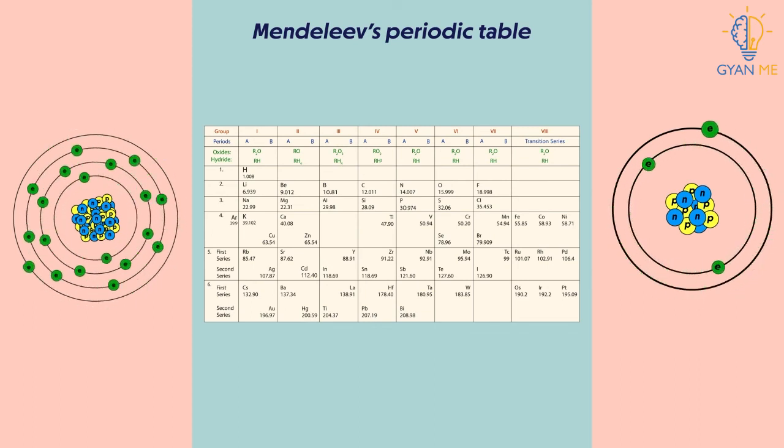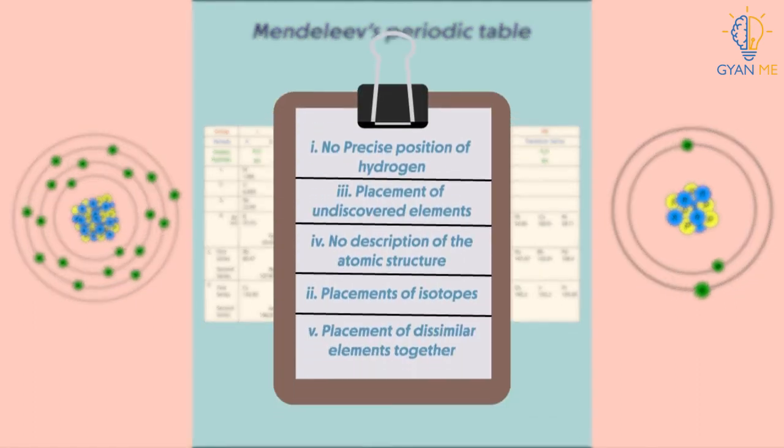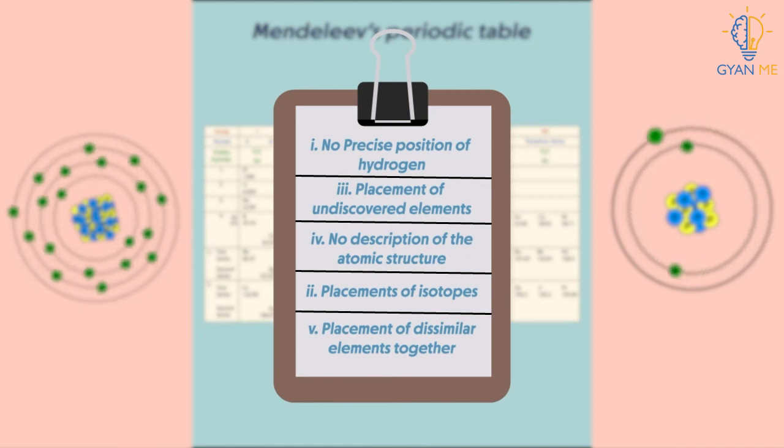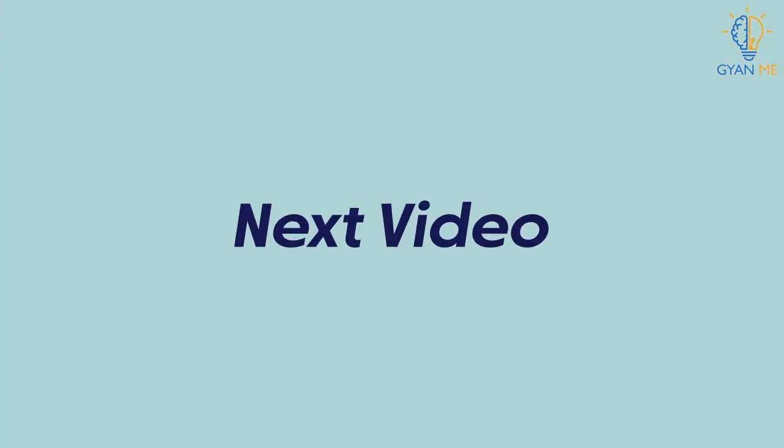Now, this idea of atomic structure leads us to one more limitation of Mendeleev's table. It is the position of isotopes. Well, we'll see that in the next video.